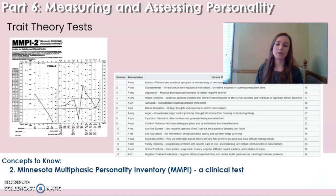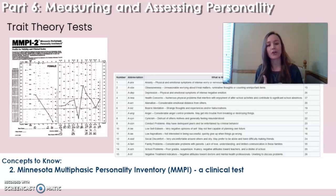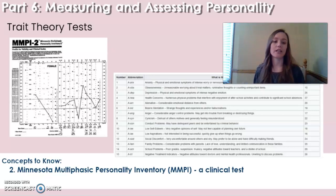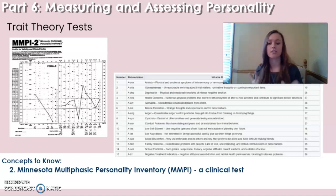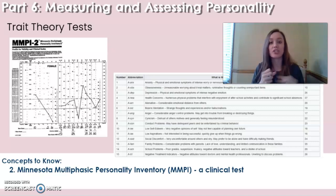Next we have the MMPI, the Minnesota Multiphasic Personality Inventory. This is a standardized psychometric test that assesses adult personality and is used primarily by mental health professionals to create treatment plans or diagnoses for abnormal personality traits. You won't find this online — it's a clinical personality test. It screens for traits on scales such as being calm, even-tempered, and easy-going all the way to rigid and unstable.